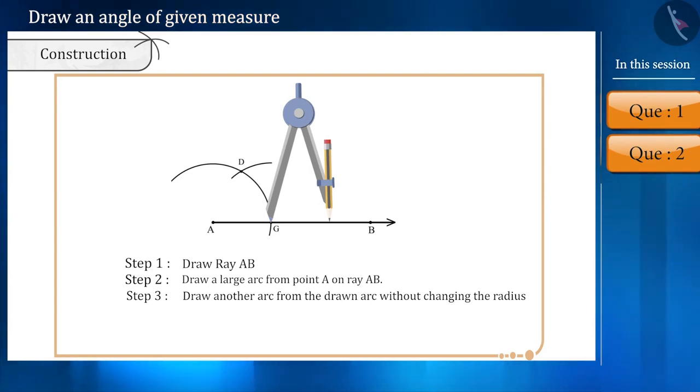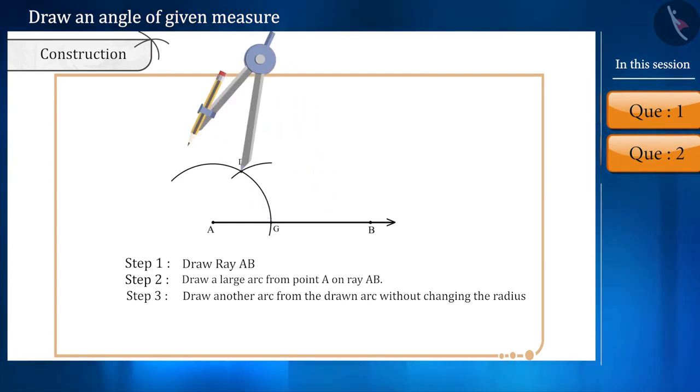Once again, with the same radius, and intersecting the larger arc from point D at point C, another arc will be drawn.